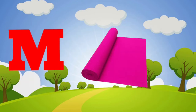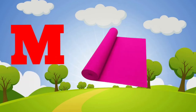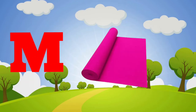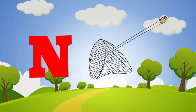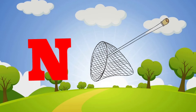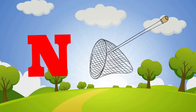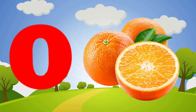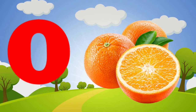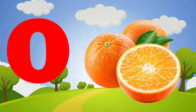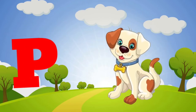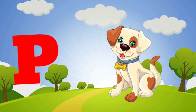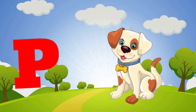M is for mat, m-m-mat. N is for net, n-n-net. O is for orange, o-o-orange. P is for pet, p-p-pet.